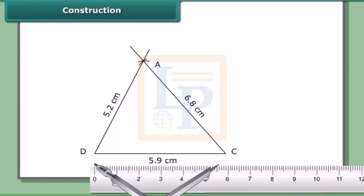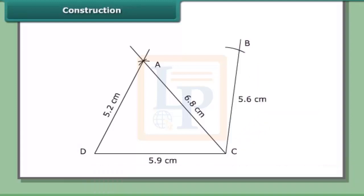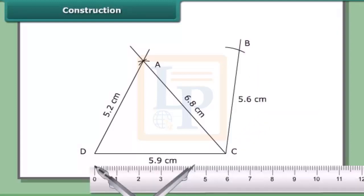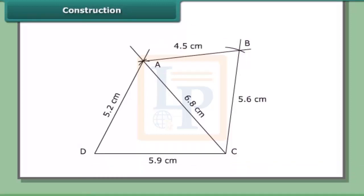Constructing triangle ABC: with C as center and radius 5.6 cm, draw an arc on the other side of AC. With A as center and radius 4.5 cm, draw another arc to cut the previous arc at B. Join CB and AB. Then ABCD is the required quadrilateral.